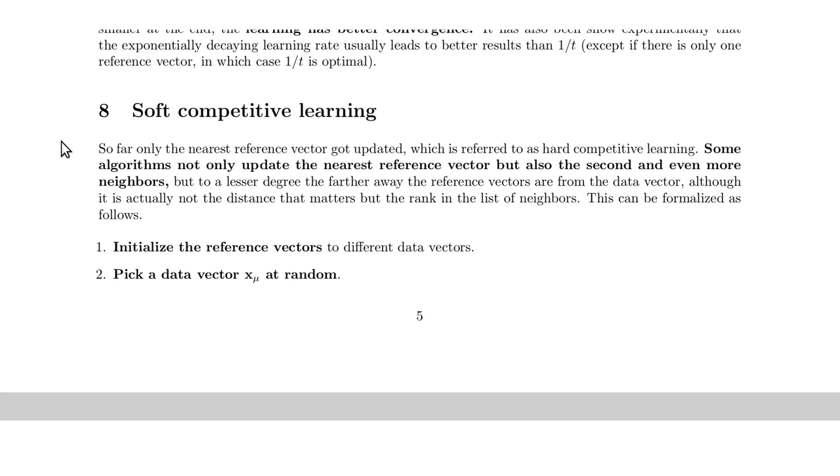So far we have considered only one reference vector, and particularly in the online learning rule we have updated just one reference vector, so there is a unique assignment from each data vector to the reference vectors. There is a variant of this algorithm that actually moves several reference vectors around simultaneously and that's called, or referred to as soft competitive learning.